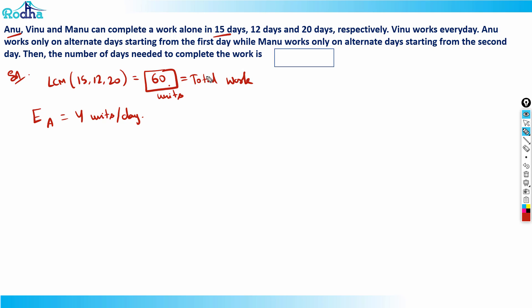60 units work can be done by Vinu in 12 days, so what is the efficiency of Vinu? 60 by 12, which is 5 units per day. And efficiency of Manu is equal to 60 by 20, which is 3 units per day.